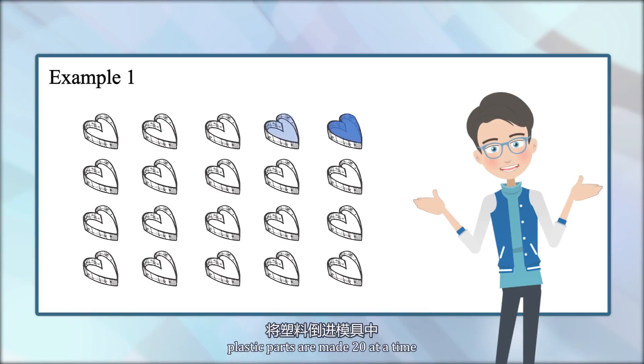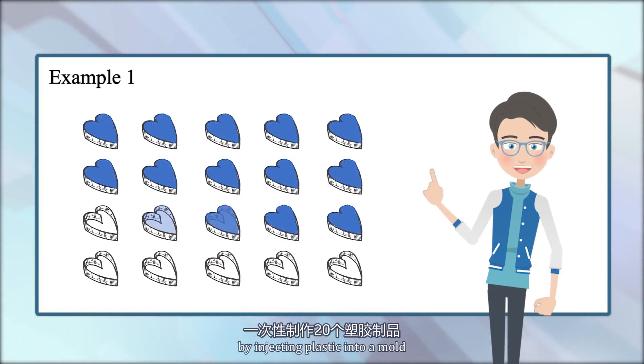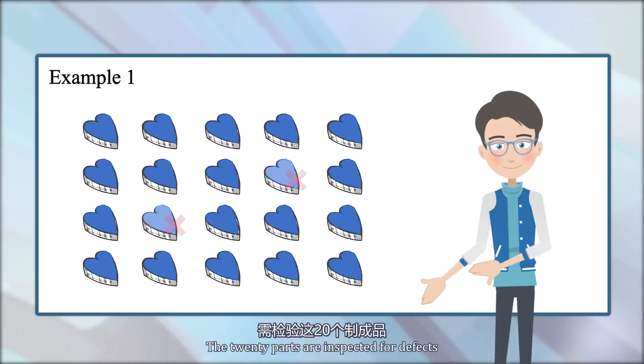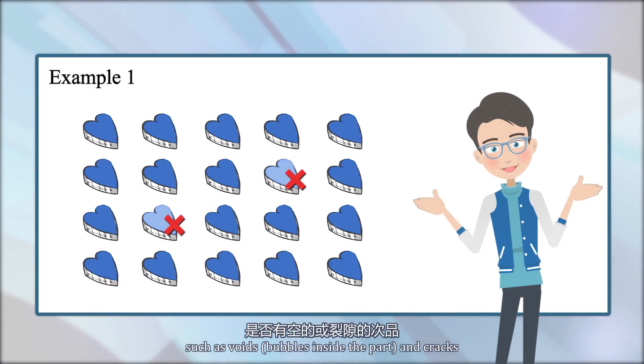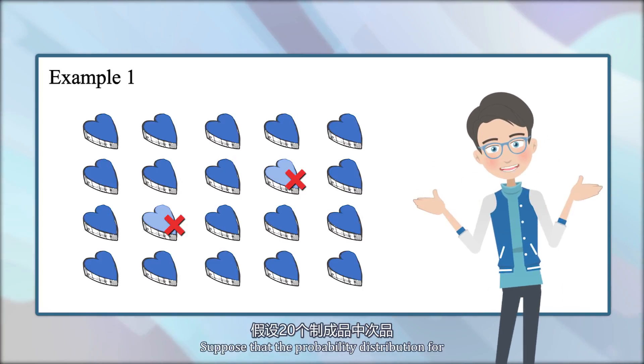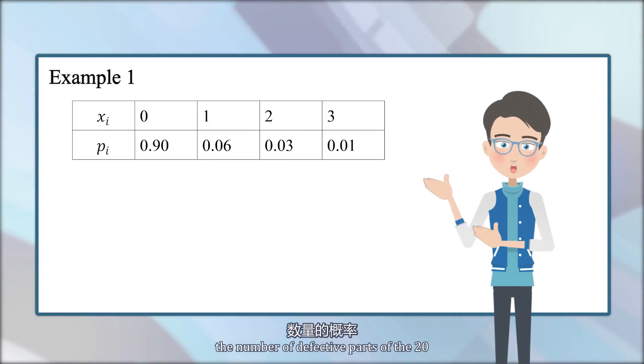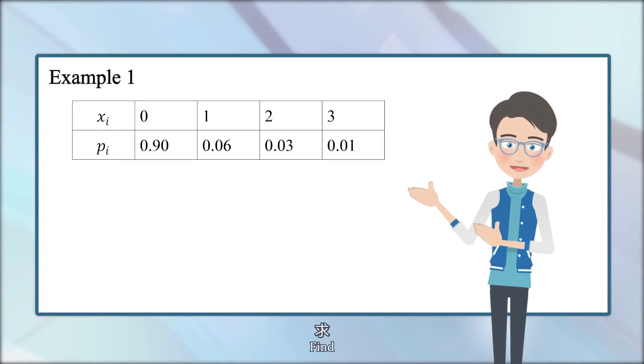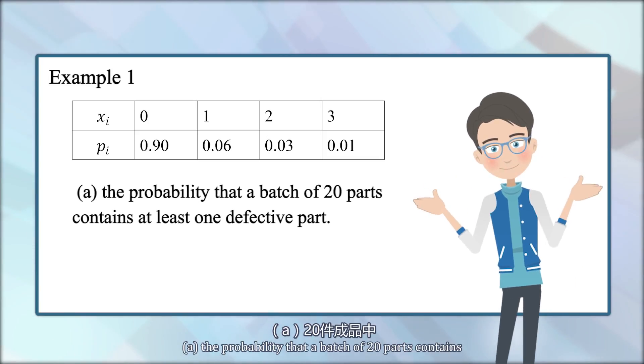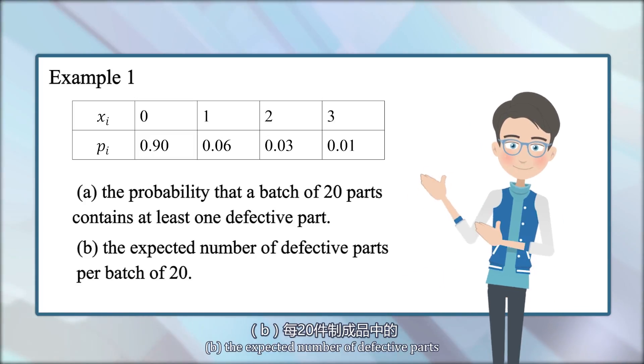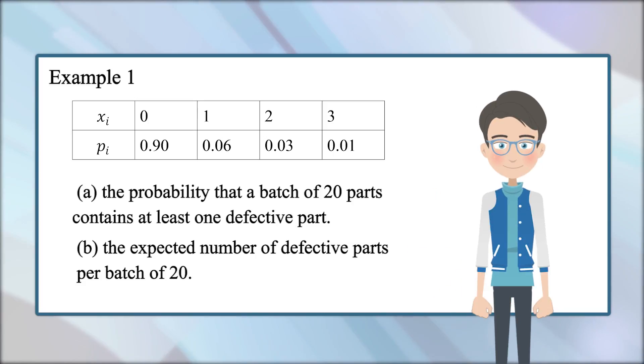Example 1. Plastic parts are made 20 at a time by injecting plastic into a mold. The 20 parts are inspected for defects such as voids, bubbles inside the part, and cracks. Suppose that the probability distribution for the number of defective parts of the 20 is given in the table below. Find A, the probability that a batch of 20 parts contains at least one defective part, and B, the expected number of defective parts per batch of 20. Good job!